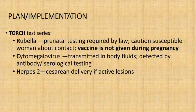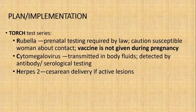R is for rubella, which is transmitted transplacentally. Prenatal testing is required by law. Caution susceptible women about contact, and remember rubella vaccine is not given during pregnancy. There is also cytomegalovirus or CMV, transmitted in body fluids and detected by antibody serological testing. There is also herpes 2, transmitted transplacentally, by ascending infection within four to six hours after rupture of membranes, or through contact during delivery if there are active lesions. Cesarean delivery is advocated if there are active lesions.